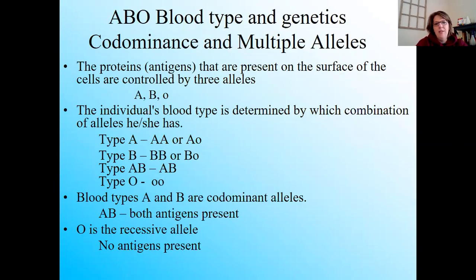So the genetics of blood typing: it's codominance and it's also multiple alleles. Those proteins are determined by three different alleles that could be present in the genes — the A allele, the B allele, and O. A and B are both capital letters, meaning they're both codominant, and O is recessive. The individual's blood type is determined by which combination of alleles he or she has. If you are type A blood, you have either two dominant A alleles or a dominant A and a recessive O allele. If you're type B, you have two dominant B alleles or one dominant B and then the recessive O. If you're type AB, you have both A and B alleles showing through at the same time. And if you have type O, you have two recessive O alleles.